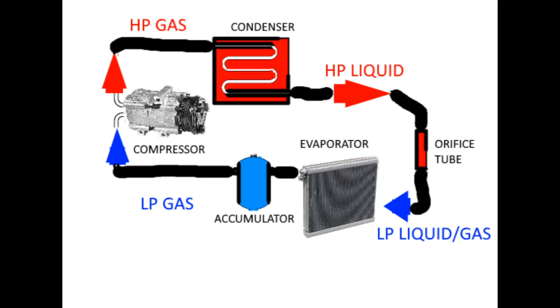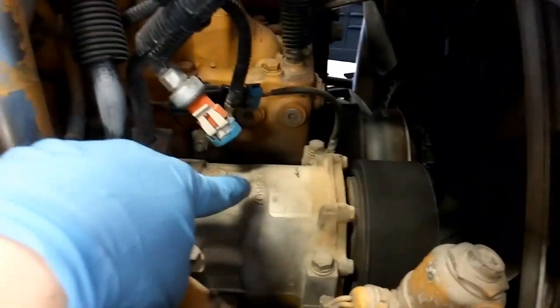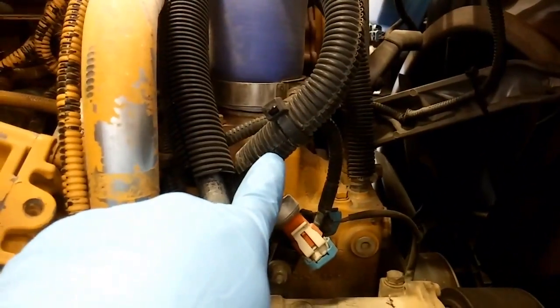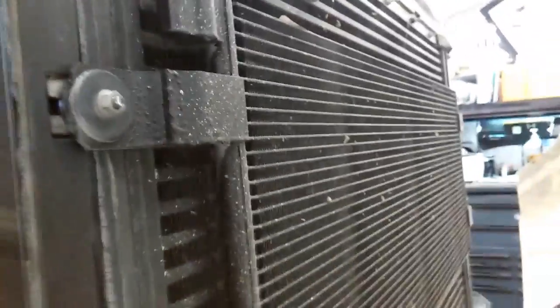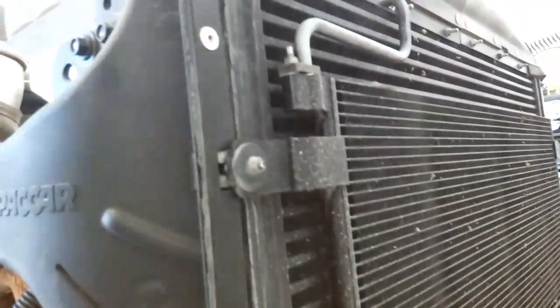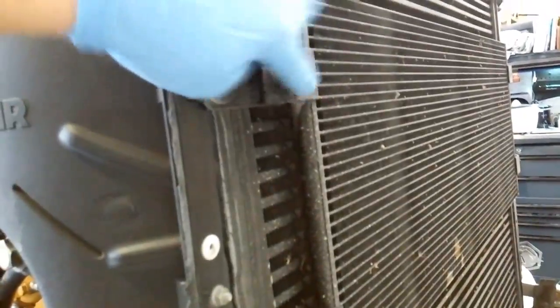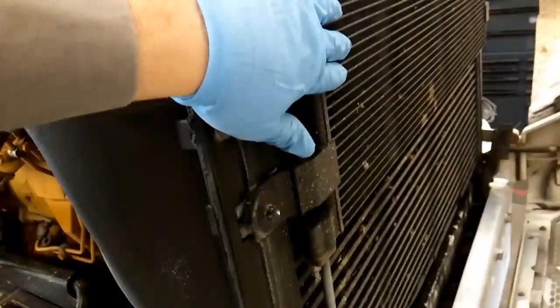Now we're going to go into where these components are located on a vehicle. We have a CAT engine here in a Peterbilt. We're going to start with your AC compressor, which is run off the serpentine belt. Then we follow the line coming out of the AC compressor — the smaller line — and it follows in front of the radiator to our condenser, which is this small-looking radiator here. You can see the steel line going into it, the fins, and a steel line coming out on the bottom.